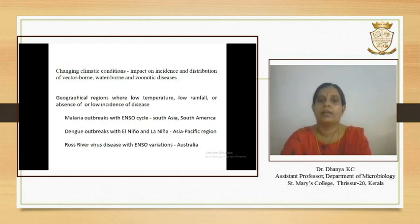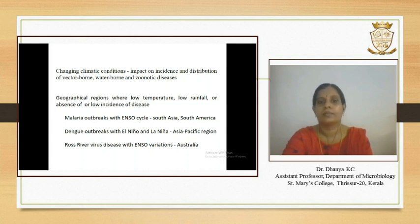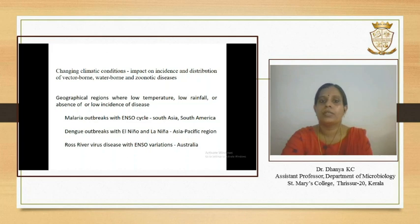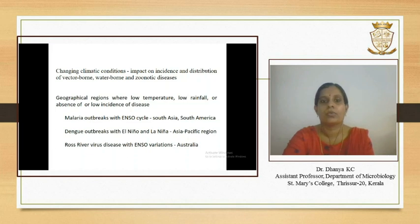Changing climatic conditions are anticipated to impact the incidence and distribution of vector-borne diseases, water-borne diseases, and zoonotic diseases. Regions where prevailing climatic conditions previously resulted in low incidence of diseases have been affected, as seen from malaria outbreaks with the ENSO cycle in South Asia and South America, dengue fever outbreaks with El Niño and La Niña events in the Asia-Pacific region, and Ross River virus disease with inter-annual ENSO variations in Australia.